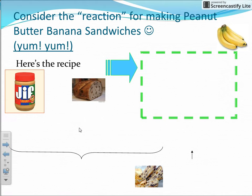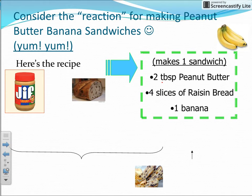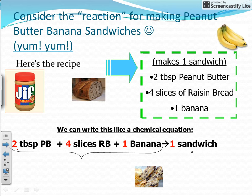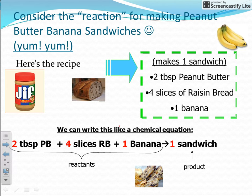Consider the reaction for making peanut butter banana sandwiches. The recipe calls for: two tablespoons of peanut butter, four slices of raisin bread, and one banana to make one sandwich. We can write this to look more like a chemical reaction: two tablespoons peanut butter plus four slices raisin bread plus one banana yields one sandwich. These coefficients are like the coefficients in a balanced equation, giving us the ratio.